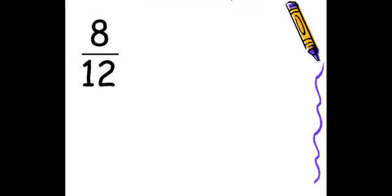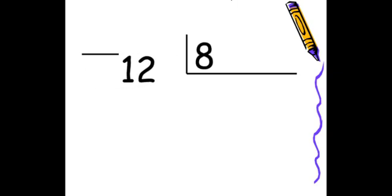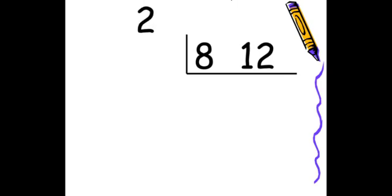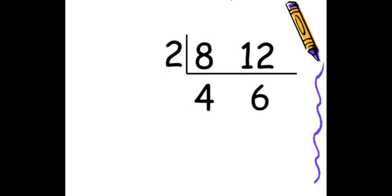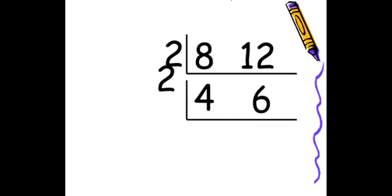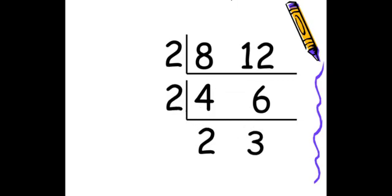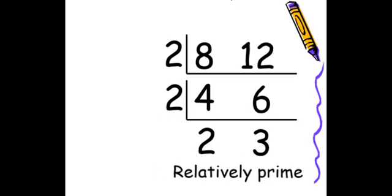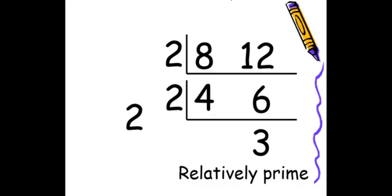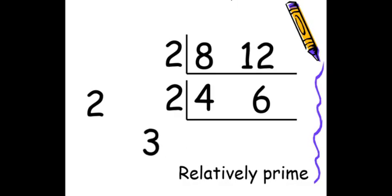Let's take a look at 8 over 12. We can use the factor bracket and figure out what number goes into 8 and 12 evenly. If you guessed 2, you are correct. 8 divided by 2 is 4, and 12 divided by 2 is 6. But 4 and 6 are not relatively prime, so we have to try again. 2 goes into 4 twice, and 2 goes into 6 three times. Now we know that 2 and 3 are relatively prime, so we can simplify it to 2 over 3.